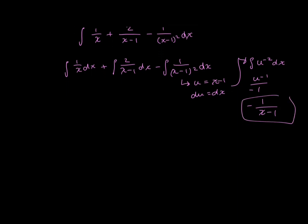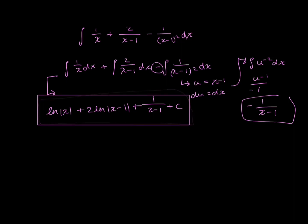So, let me just write everything nicely. So, the first integral just gives me ln x. And then my second integral gives me 2 ln x minus 1. And then, my, this, there's a negative here, so this becomes plus 1 over x minus 1. Don't forget your arbitrary constant, c. And that's it.